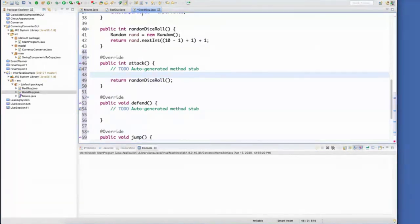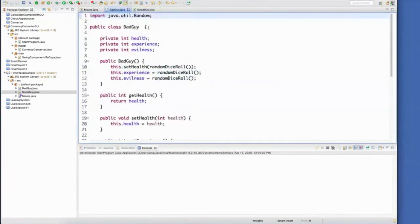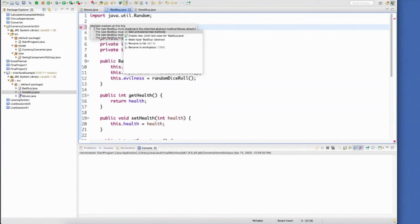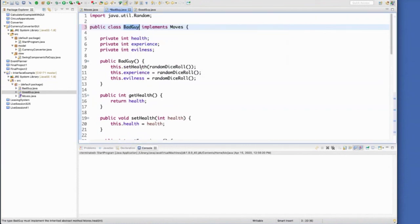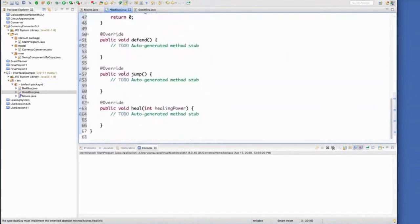And then let's go ahead and implement this guy into BadGuy. Again, I'm just going to go ahead and add those unimplemented methods. And they'll pop up down here at the end.